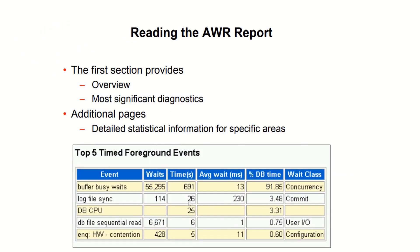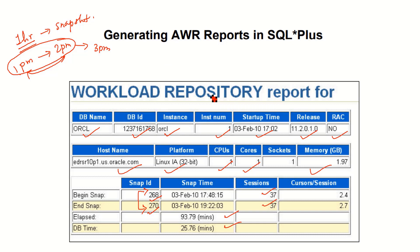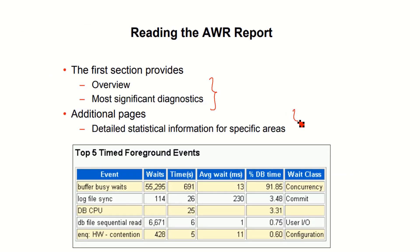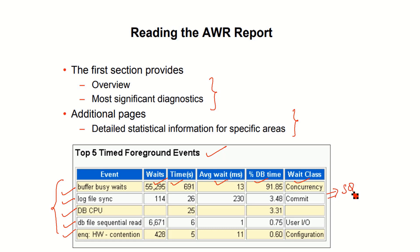The first section provides an overview and the most significant diagnostics. Additional pages provide detailed statistical information for specific areas, such as foreground events — buffer busy wait, log file sync, DB CPU, DB file sequential read, and queue contentions — showing wait time, average wait, DB time percent, and wait class. The load profile section shows DB time, DB CPU, redo size, logical reads, block changes, physical reads, physical writes, user calls, parsing, hard parses, sorting, logons, and executions.